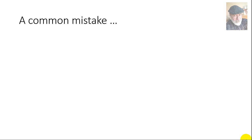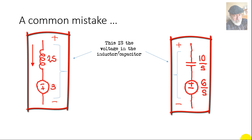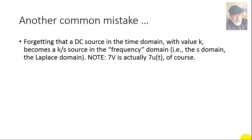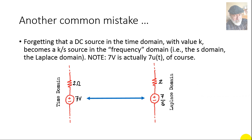Let me highlight common mistakes I've noticed among my students. The impedance sL or 1/Cs alone is not the voltage in the inductor or capacitor — the whole combination, including the initial condition source, represents the inductor or capacitor. Do not forget that. Another common mistake: when you have a DC source of value K in the time domain, it becomes K/s in the Laplace domain, because 7 volts is actually 7 multiplied by the Heaviside step function u(t), whose Laplace transform is 1/s.